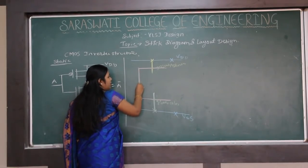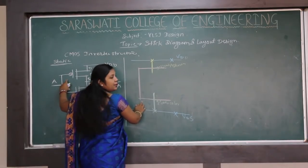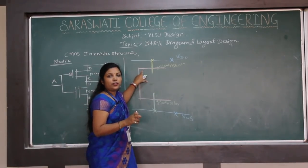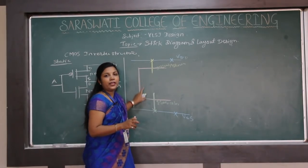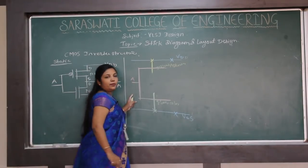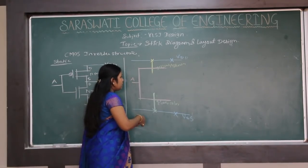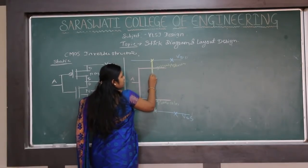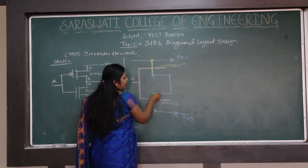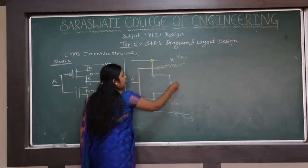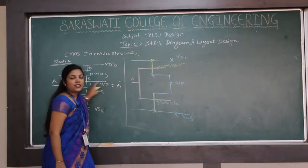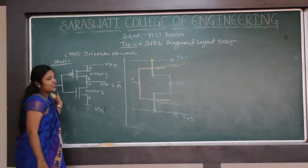Since we need the same input to both gates, the polysilicon gate terminal receives input A at a common point. To get the output, two more sticks connected with metal provide the output terminal. The stick diagram of the basic CMOS inverter static logic design is now complete.